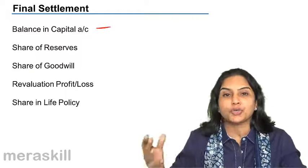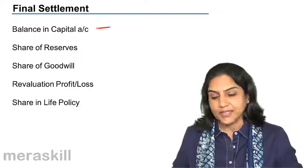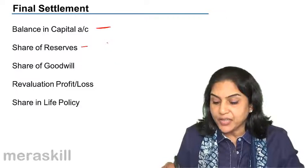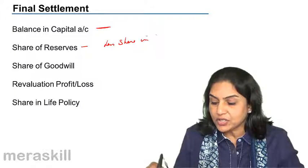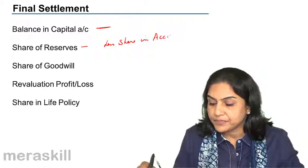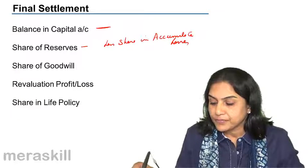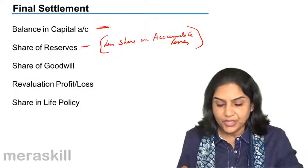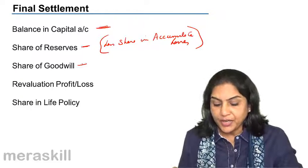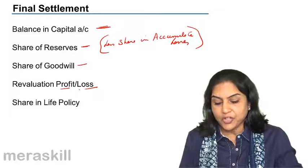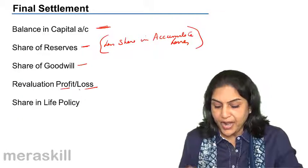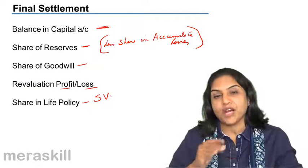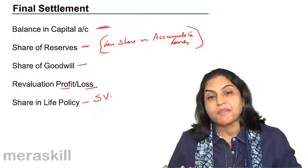Let us see what are the dues of the partnership firm to the retiring partner: the balance in the capital account, his share of reserves, less any share in accumulated losses. His share of goodwill, revaluation profit or loss — profit would increase his dues, loss would reduce them — and his share in the surrender value of the life policies of the partnership firm.